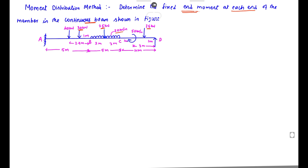Taking the first member A-B: it has a 5-meter length with two point loads — 40 kN and 30 kN. The 40 kN load is at 1 meter from A, and the 30 kN load is at 2.5 meters, with 1.5 meters remaining. Now we can find the fixed end moment MF_AB.